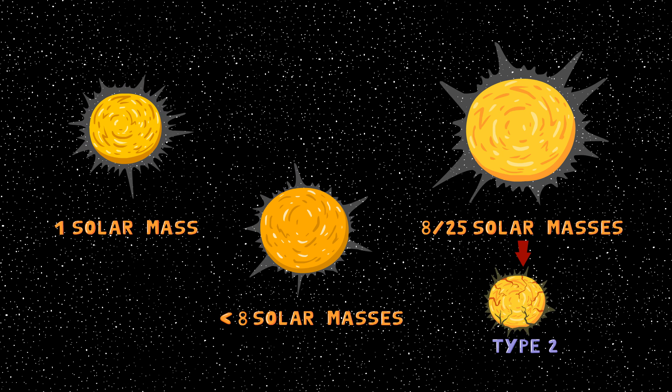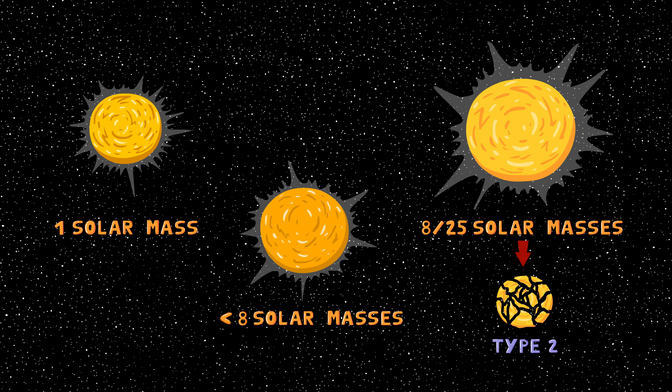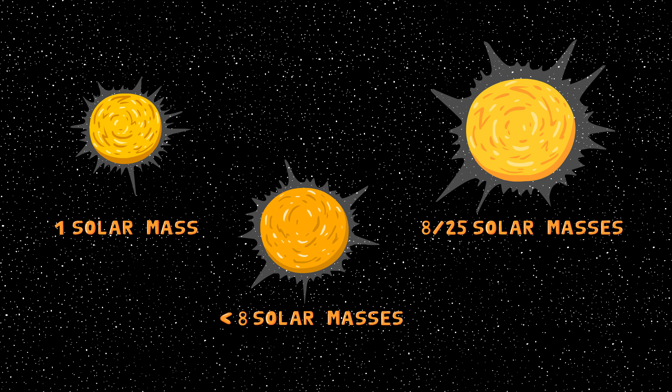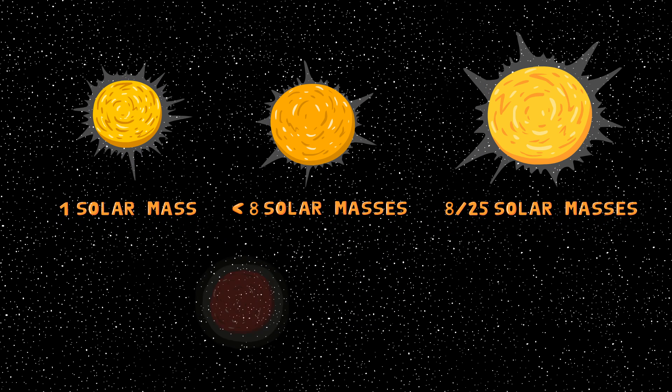The star will begin to implode at about a quarter of the speed of light until neutron degeneracy pressure keeps it from collapsing. And boom! As much energy as our sun produces in its 10 billion year life is released in a matter of seconds. What's left is a neutron star.